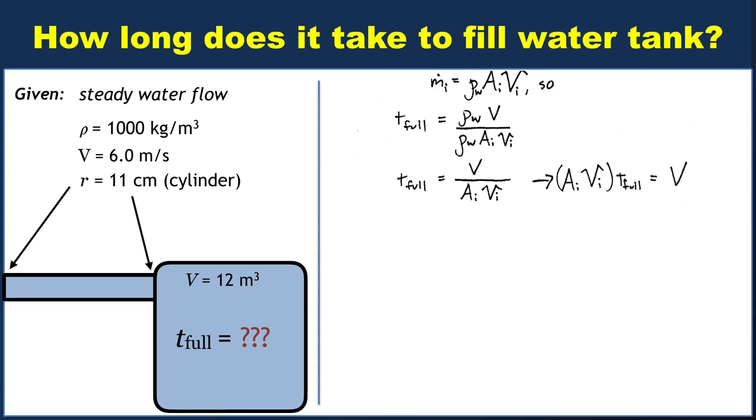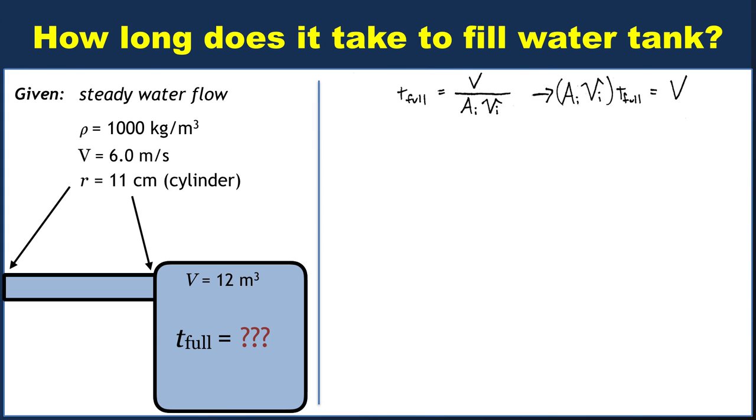Okay, so now we can just plug in values for volume, velocity, and area. So t full equals 12 cubic meters. The cross-sectional area of the pipe, I said it's a cylinder, so its cross-section is a circle of area pi r squared. So I put in pi, I put in 0.11 meters squared, making sure to get into SI units cleanly, and then the velocity is 6 meters per second. Multiply all that out, and you get that the time it takes to fill this tank is 53 seconds.